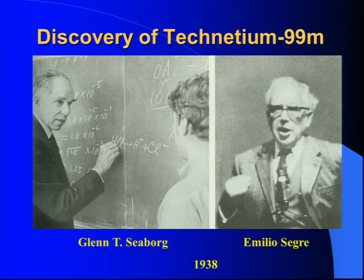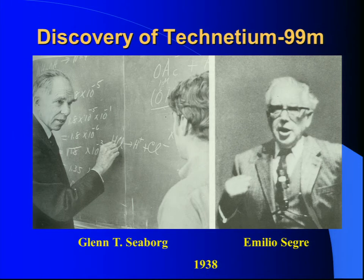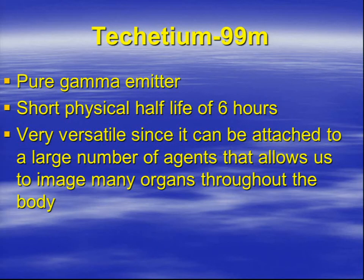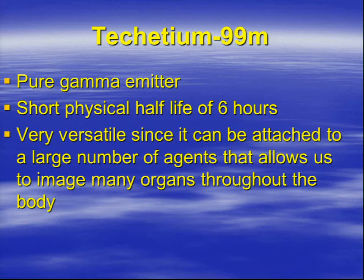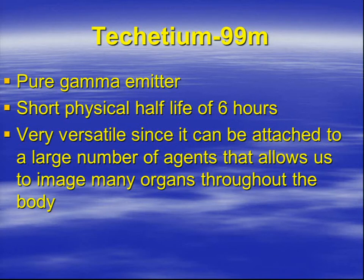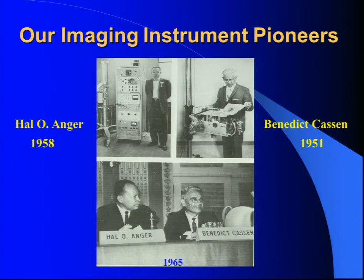The most common isotope — you probably heard the name today — is technetium-99M. Technetium is the most common isotope we use. It's a gamma emitter used for diagnostic purposes. Dr. Glenn Seaborg also worked in Berkeley, California, and was the first commissioner of the Atomic Energy Commission formed after World War II. Dr. Segre from Italy joined him. Technetium-99M accounts for literally 90% of the diagnostic studies we do in any given day. It's incredibly versatile — we can attach it to many different tracers to image various organs throughout the entire body. It has a six-hour half-life, unlike uranium and radium with their enormously long half-lives, so it works very well for diagnostic purposes as a pure gamma emitter.